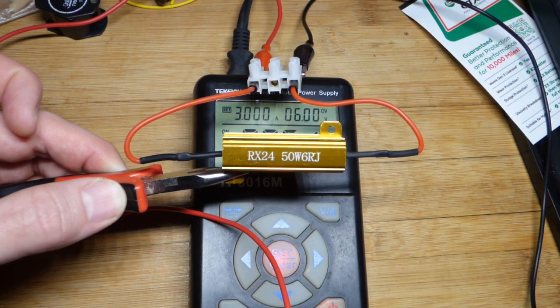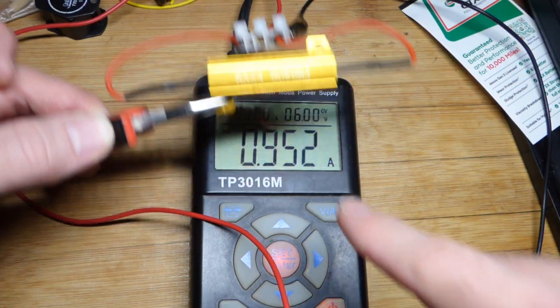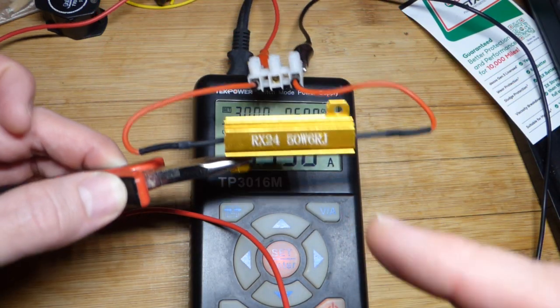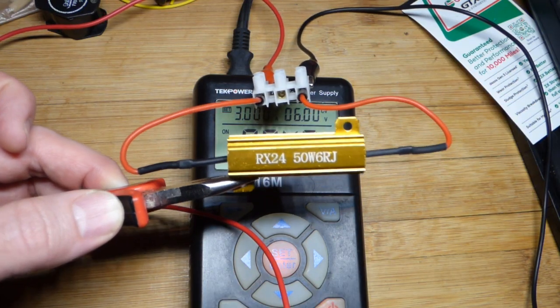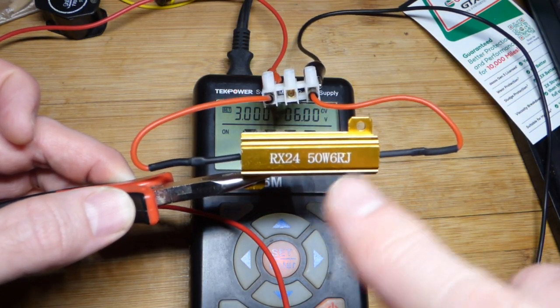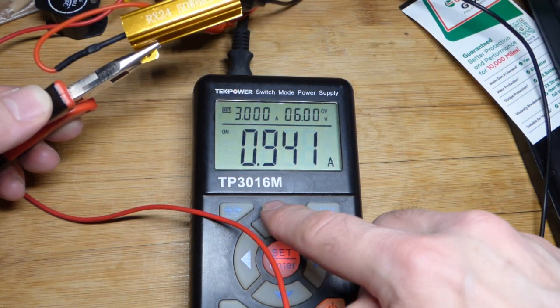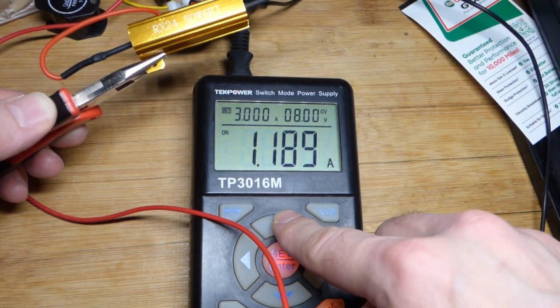Now you got to worry about power as well. That's what the wattage is for. So 6 volts times 1 amp of current is 6 watts. That's the heat that's generating and has to be able to dissipate, and it should be able to do so pretty easily because it's a 50 watt resistor. It's pretty big.